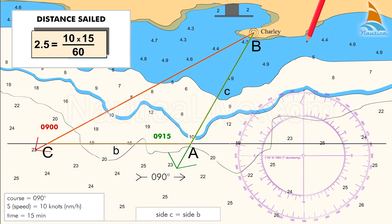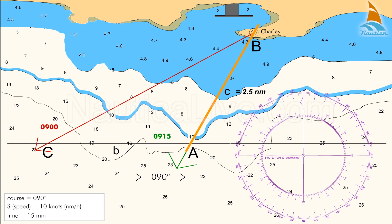That means that the distance from the Charlie radio tower when we took the second bearing at 0915 was 2.5 nautical miles. Using this method, we have a bearing and a distance using only one object.